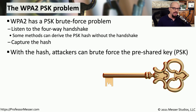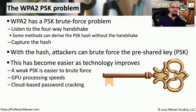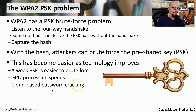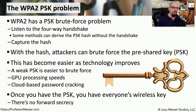Once attackers have captured that hash information, they can begin the brute force process to determine what the pre-shared key might be. As security professionals, we know that brute forcing these keys becomes easier over time, partly because GPUs are increasingly used for decryption and brute force functionality and are getting faster. We can also use the cloud and many hundreds or thousands of systems to work on the brute force simultaneously. Once you've found that pre-shared key, you effectively have access to all of the data sent over that wireless communication.